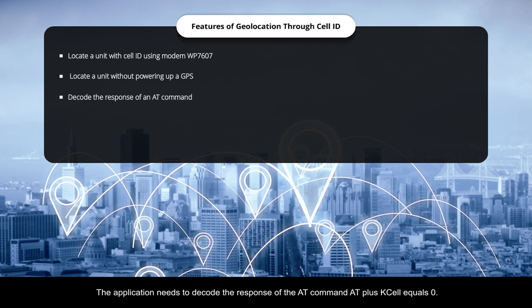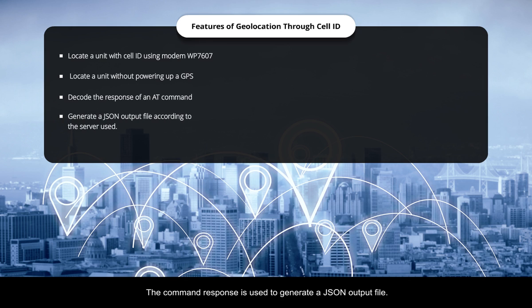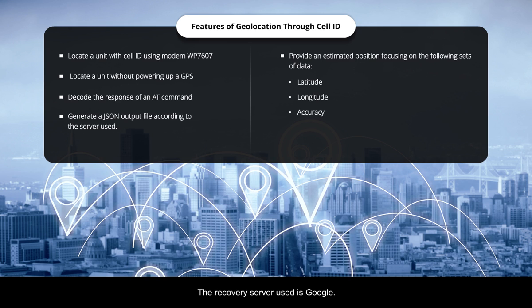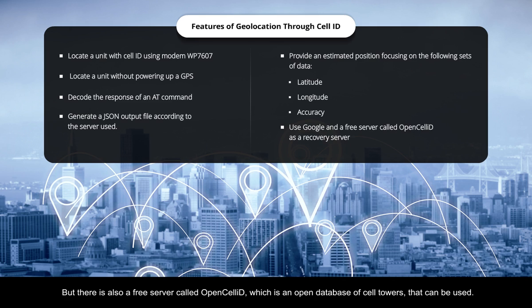The application needs to decode the response of the AT command AT+KCELL=0. The command response is used to generate a JSON output file. The JSON file is sent to the API server, which will provide an estimated position with the latitude, longitude, and accuracy data. The recovery server used is Google, but there is also a free server called OpenCellID, which is an open database of cell towers that can be used.